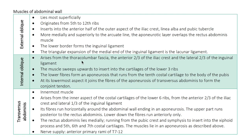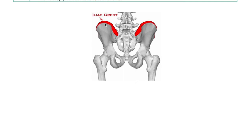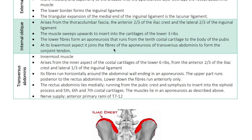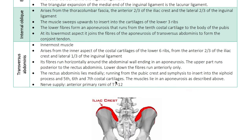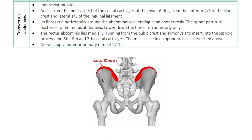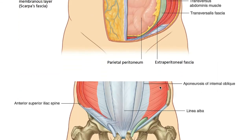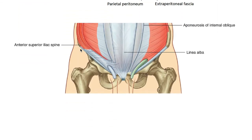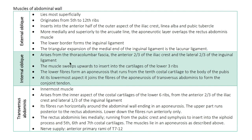The internal oblique arises from the thoracolumbar fascia, the anterior two-thirds of the iliac crest, and the lateral two-thirds of the inguinal ligament.